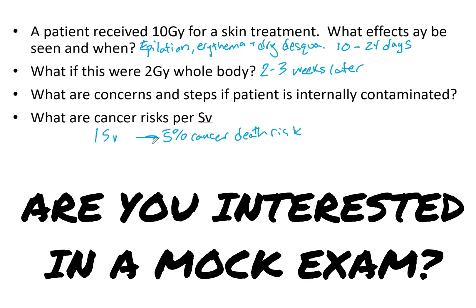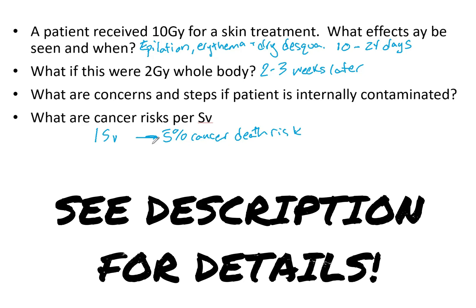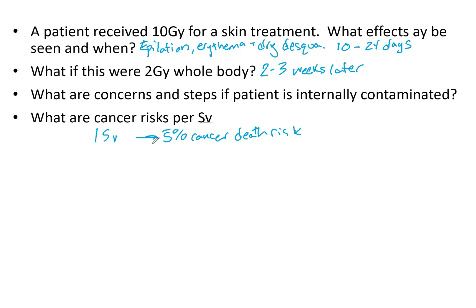Know your stochastic and deterministic effects — know when they're going to happen and how severe they'll be. Know internal contamination management as well, and any general stats that seem relevant, like what's the cancer risk if you get 1 gray. If you have any questions, please comment below. Thanks for watching, have a great day.